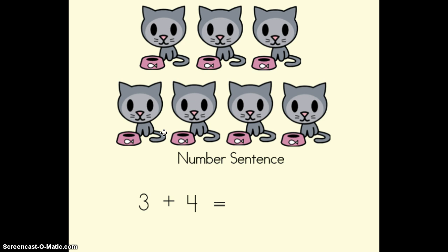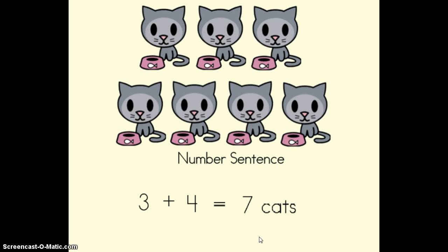So three plus four — that's my three cats plus four cats. To find out the answer I have to count my whole group: one, two, three, four, five, six, seven. We have seven cats in all, so your number sentence looks like this: three plus four equals seven. When we add small groups together the answer is called the sum, so seven is our sum. We can't forget to label our answer: three plus four equals seven cats.